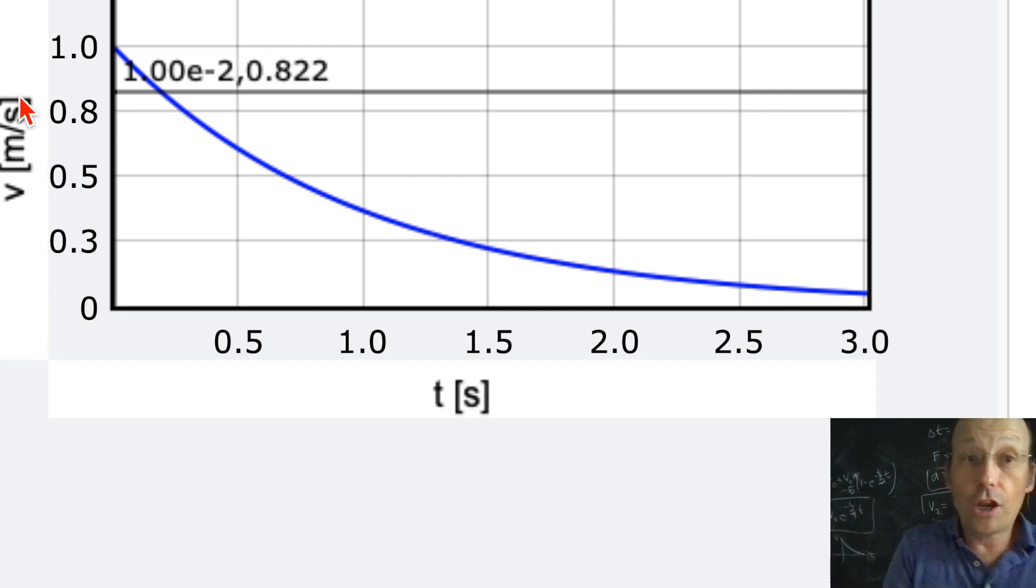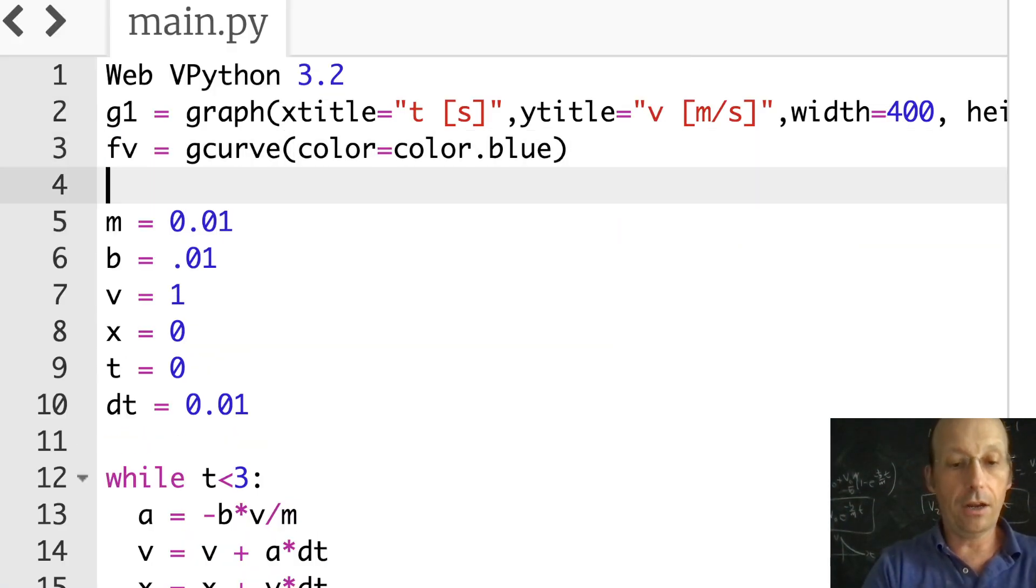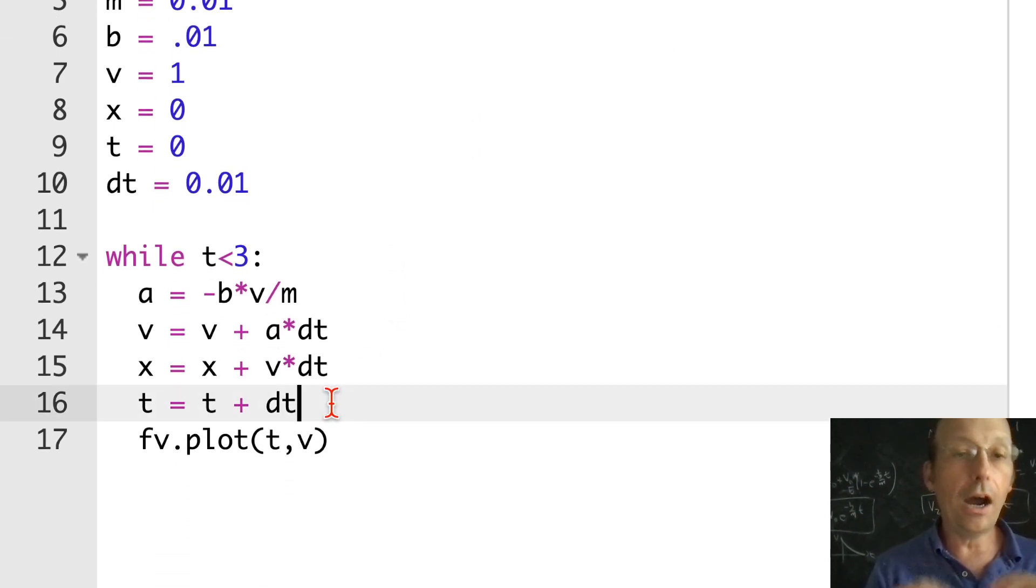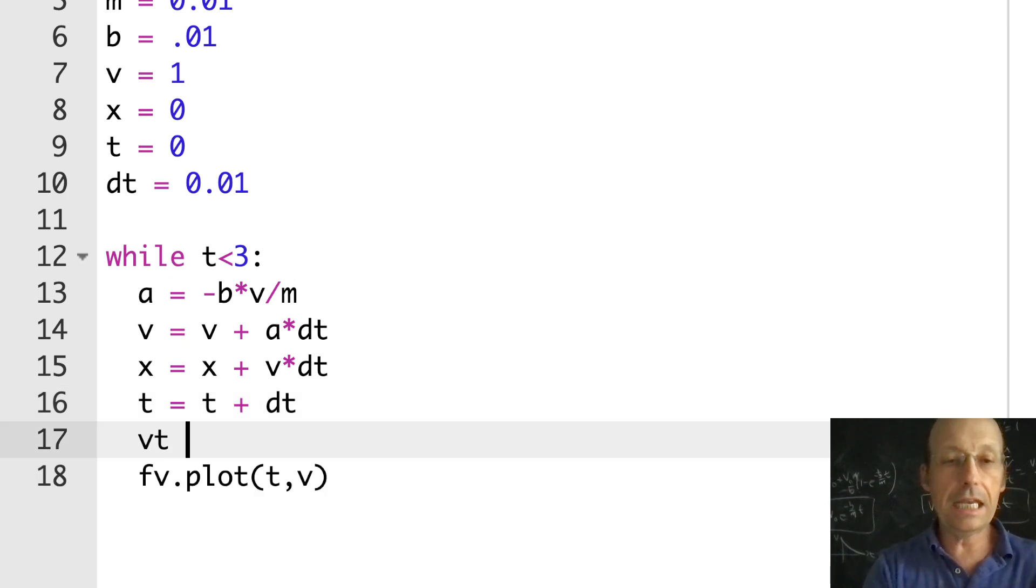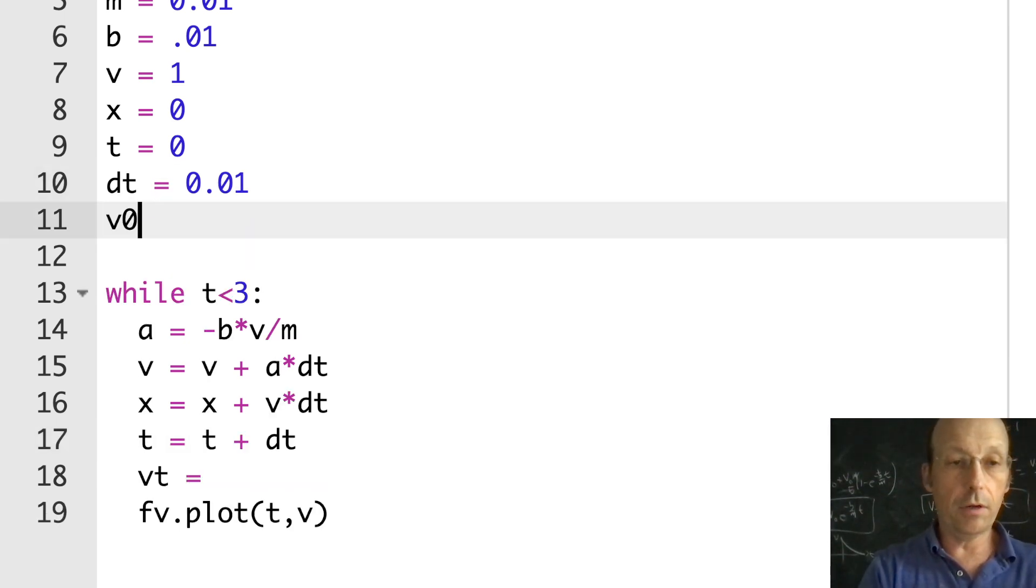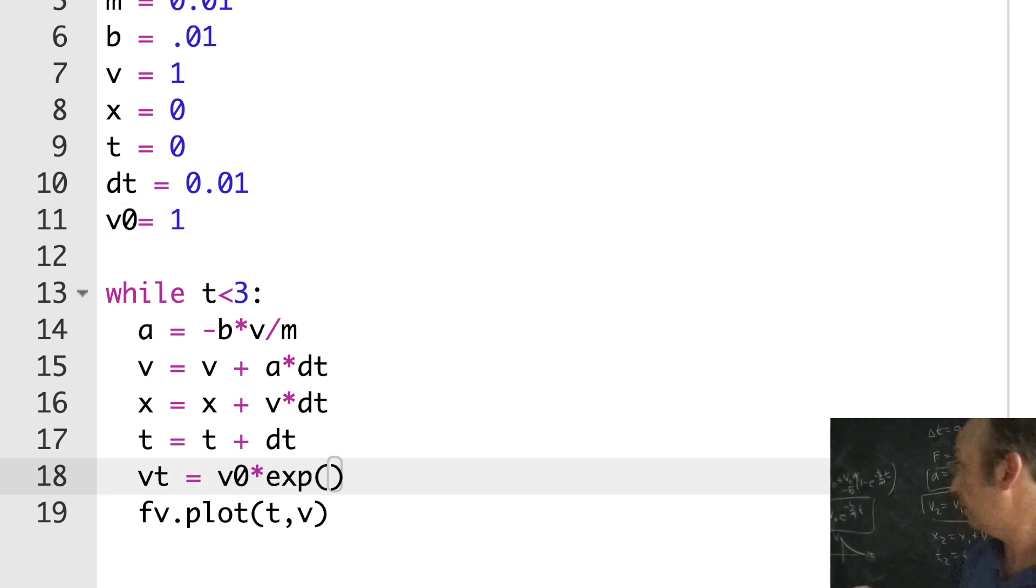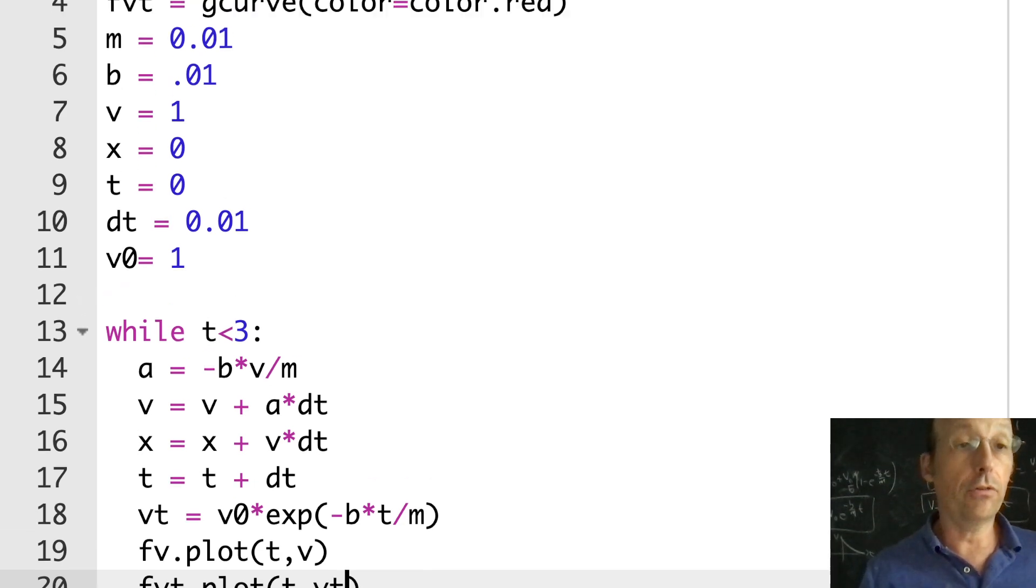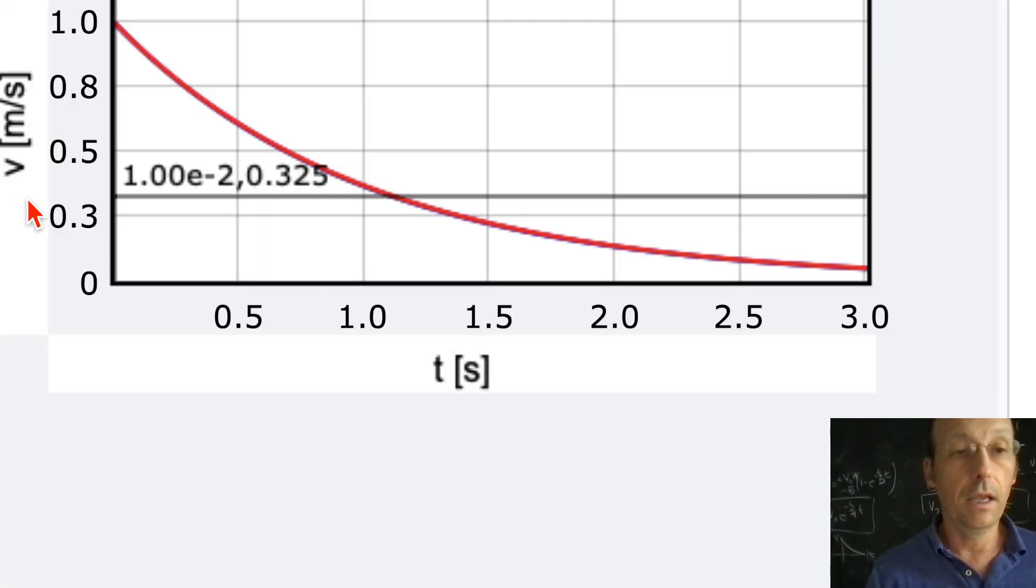But let's calculate the theoretical value and see if they agree. I'm going to make another curve: fvt equals gcurve, color equals color.red. Down here I'm going to calculate what that should be. vt is my theoretical velocity. I need v₀ equals 1. This is v₀ times the exponent of negative b times t divided by m. Notice I'm using t not dt because this is an exact equation. I can plot that: fvt.plot(t, vt). Let's see how those two things agree.